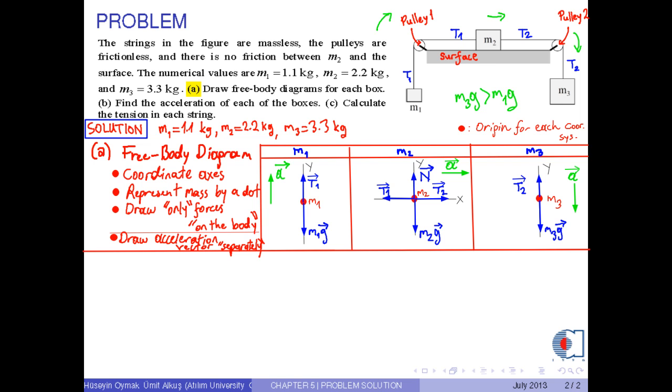To sum up, as you see, we do not draw the acceleration vectors on the body and we represent them by a green arrow since the arrows for the forces have already been chosen to be blue. These are the free body diagrams for each box.